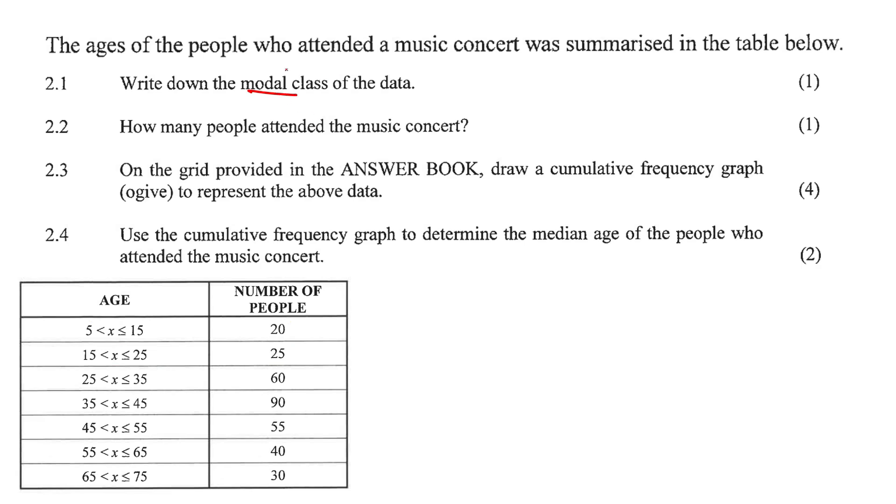So it says write down the modal class. Now mode means most, so it's not the most as in looking at the 75, it's the most as in which category had the most people. So it's this one over here, 90. So that's the class over there. So we say 35 less than x less than 45. Just write it exactly as they have it.